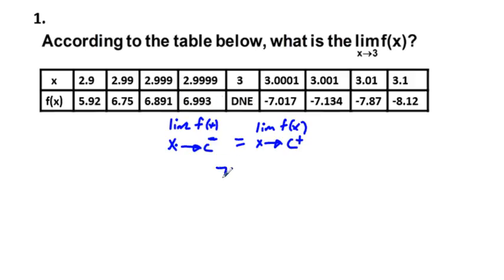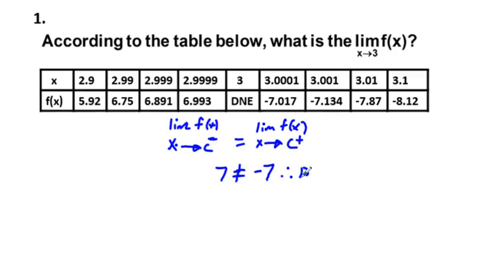From the left side, the decimals are getting closer and closer — it looks like we're approaching seven. On the right side, coming from the right, we have negative eight, negative seven point eight — we're approaching negative seven. The limit from the left does not equal the limit from the right, therefore the limit does not exist: DNE.